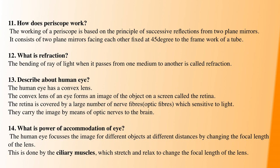Next question: what is the power of accommodation of the eye? The eye is able to see objects at different distances by altering the focal length of the lens. The main point is that the ciliary muscles are responsible for this adjustment.